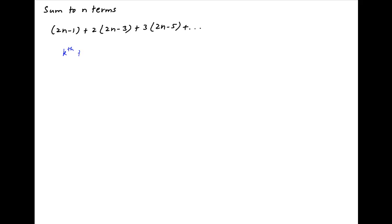We start by noting that the general term, or the kth term of this series, let's denote it by tk, is equal to k times (2n minus 2k minus 1). This can be written as k times (2n plus 1 minus 2k).